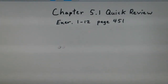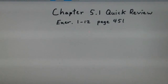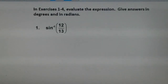This is Chapter 5.1 Quick Review, Exercise 1-12, page 451. We're going into the section on the identities of trigonometry and using them. In Exercise 1-4, evaluate the expression and give answers in degrees and radians.